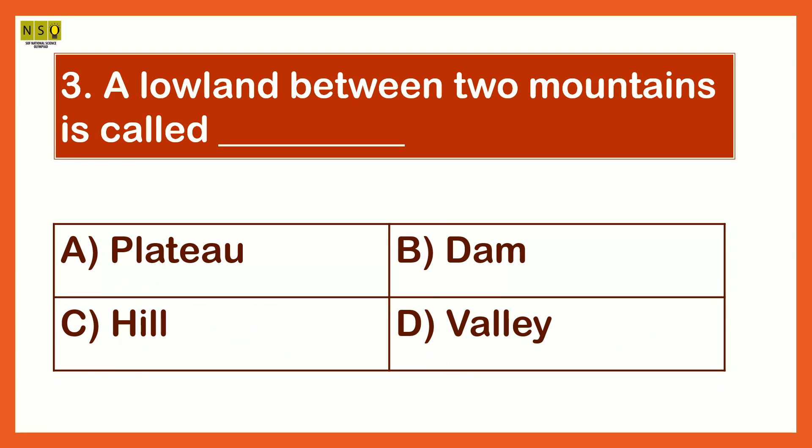A low land between two mountains is called Valley. The options are Plateau, Dam, Hill, Valley. The answer is Valley. A low land between two mountains is called Valley.